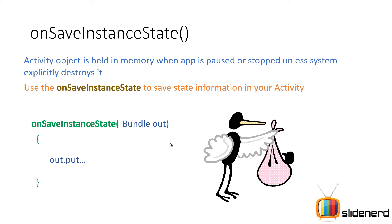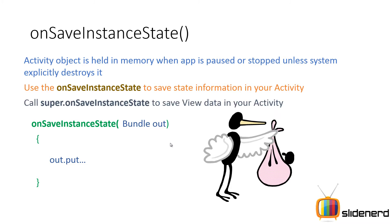There is something you should remember: always call super.OnSaveInstanceState. If you remember the last presentation, I had an EditText with an ID, and that is when information was saved automatically. All that automatic saving of view data is done inside the super class method OnSaveInstanceState. So be sure to call it, otherwise your view data won't be saved.